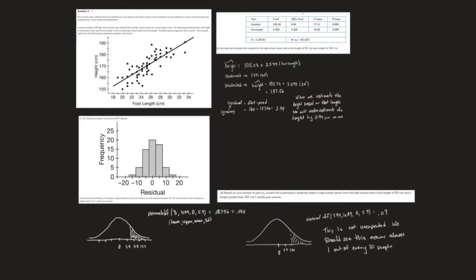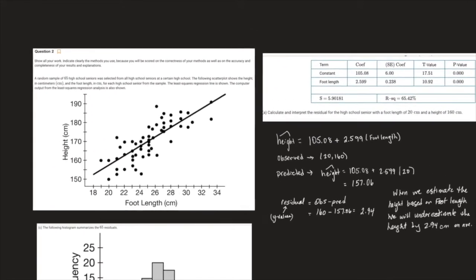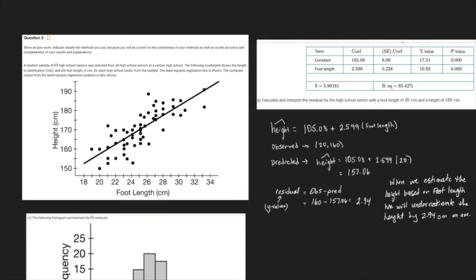In question two we're looking at a scatter plot with residuals, lines of best fit, and regression models. In part A we're asked to calculate and interpret the residual of the high school senior with a foot length of 20 centimeters and a height of 160 centimeters. From the regression output, we focus on the constant — that's the y-intercept — and the coefficient of foot length, which is the slope. To correctly estimate a residual, remember: residual equals the observed value minus the predicted value.